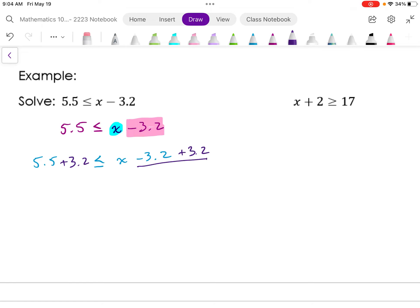Let's look at the right-hand side. Negative 3.2 plus 3.2 is 0. So on the right-hand side, I get x.